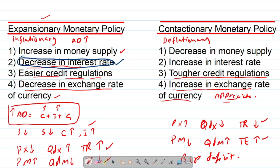Monetary policy also depends on fiscal policy and supply-side policy. For example, if the government wants to increase economic growth by decreasing interest rates but at the same time fiscal policy is contractionary — causing aggregate demand to decrease — the expansionary monetary policy tries to increase aggregate demand while contractionary fiscal policy pushes it down. This policy will fail if it is not well-aligned with fiscal policy. Economists also suggest using supply-side policies because they have sustainable long-run impacts rather than short-term impacts from demand-side policies.